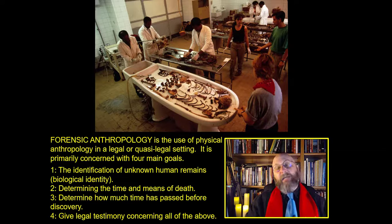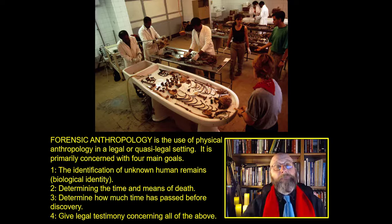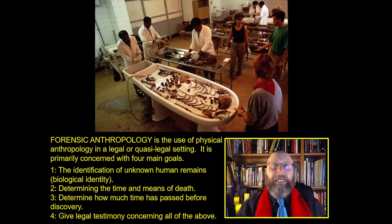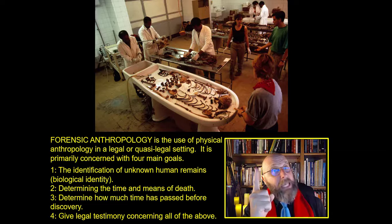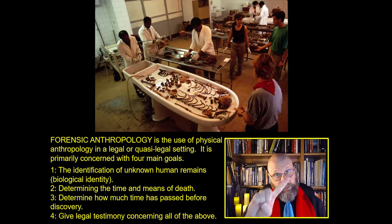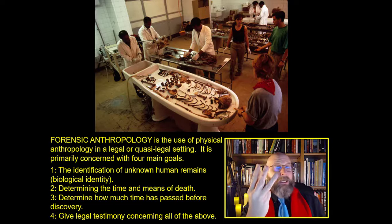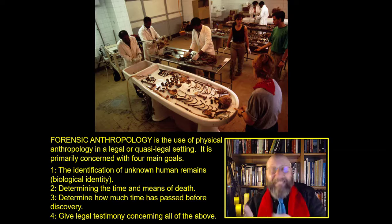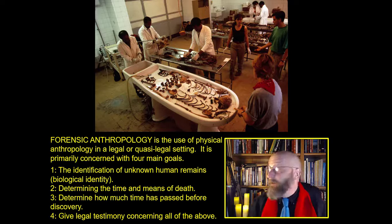We're going to start by defining what forensic anthropology actually is. Defined, at least in terms of this course, forensic anthropology is the use of physical anthropology in a legal or quasi-legal setting, and as such it is concerned with four main goals: one, the identification of unknown human remains using a biological identity; two, determining the time and means of death; three, determining how much time has passed between death and the discovery of the remains; and four, the ability to give legal testimony about all of the above.